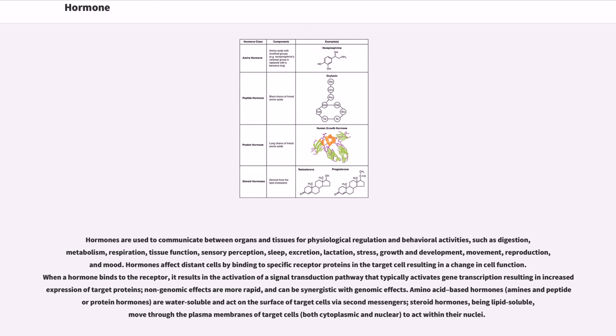Amino acid-based hormones, amines and peptide or protein hormones, are water-soluble and act on the surface of target cells via second messengers. Steroid hormones, being lipid-soluble, move through the plasma membranes of target cells, both cytoplasmic and nuclear, to act within their nuclei.